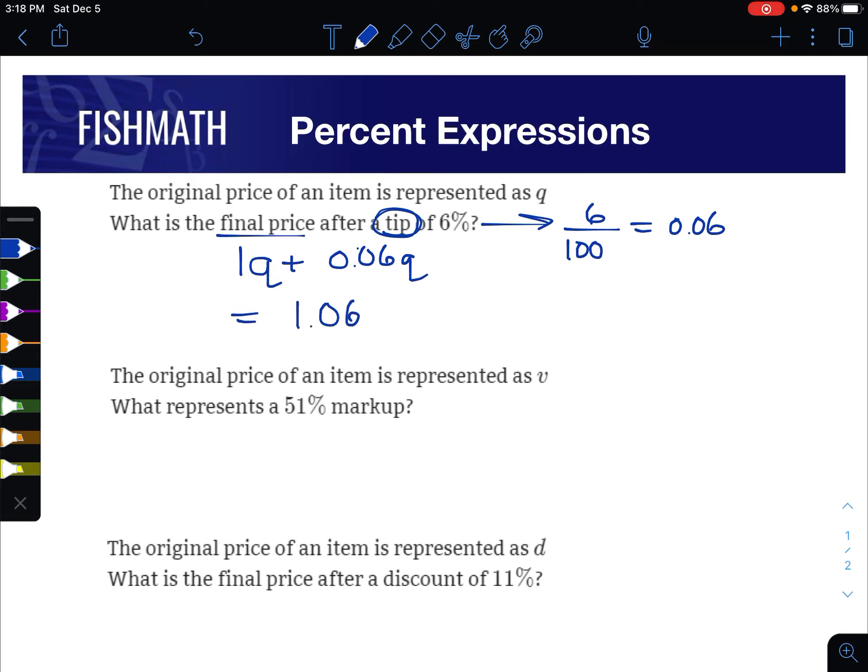So you could combine these into being 1.06q for a simplified expression. This should make sense because the first one is 100%, this is 6%, and this would represent 106% after you add the 6% on. So our answer would be 1.06q.